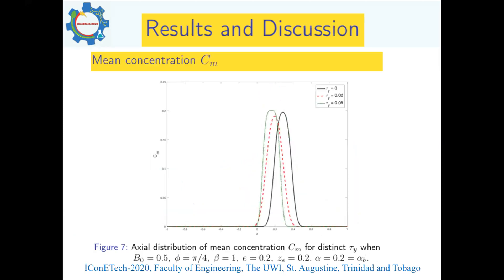Figure seven shows the axial distribution of the mean concentration C_m for different values of the yield stress tau_y for fixed values of the other parameters. We see that as tau_y increases from 0.02 to 0.05, the peak of the mean concentration also increases.